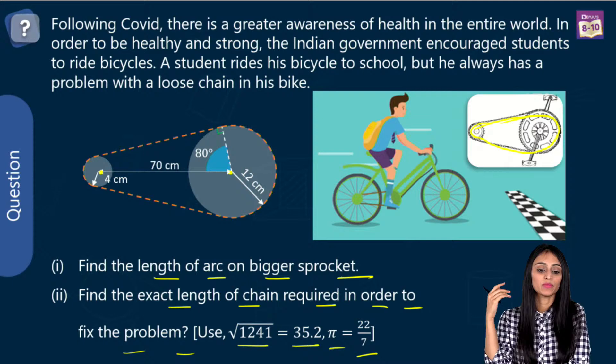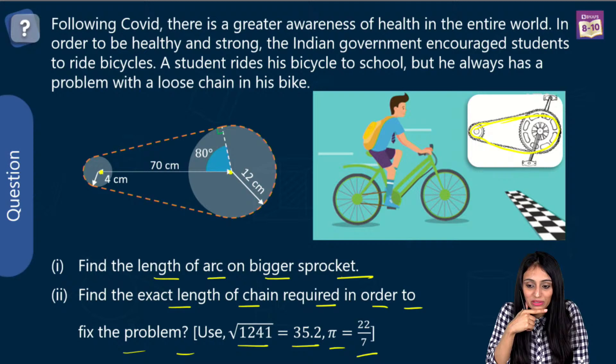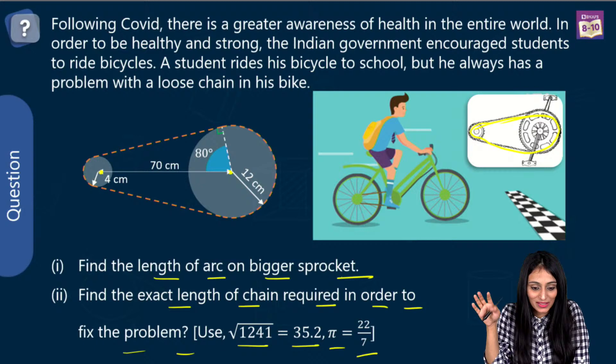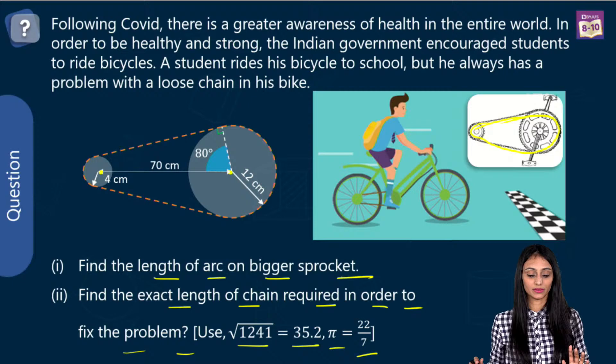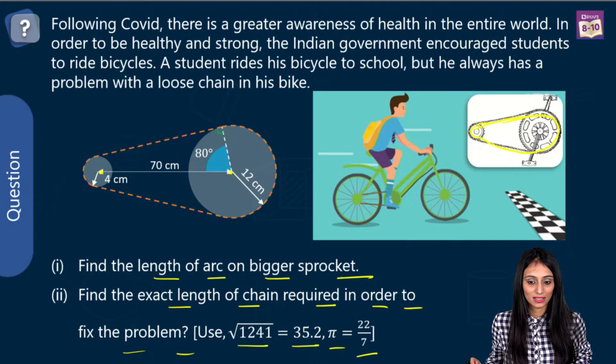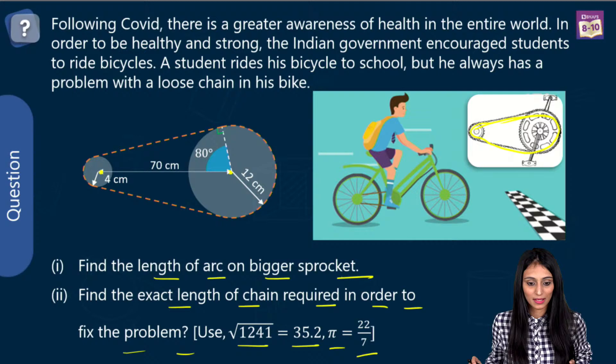Looking at the figure: the bigger circle has a radius of 12, the smaller one has a radius of 4. The angle given is 80 degrees. The straight line is tangent to the circles, so that angle is 90 degrees. The distance between the centers of the two circles is 70 centimeters. The orange dotted line represents the chain.